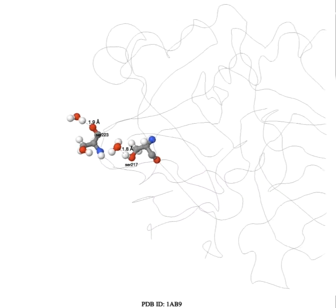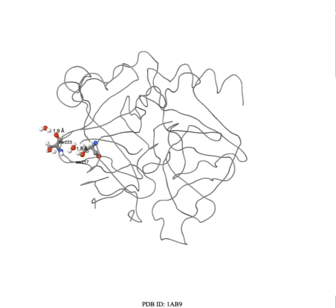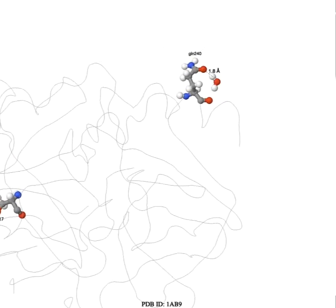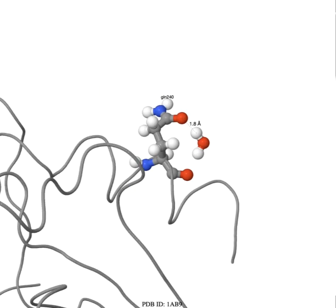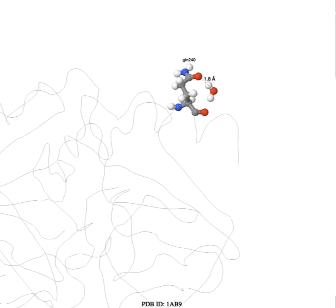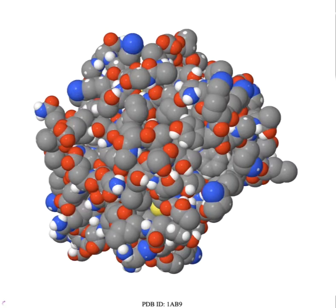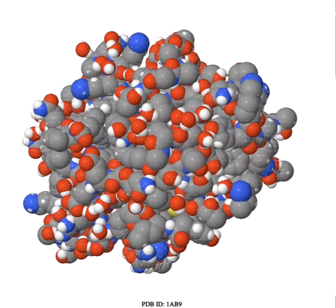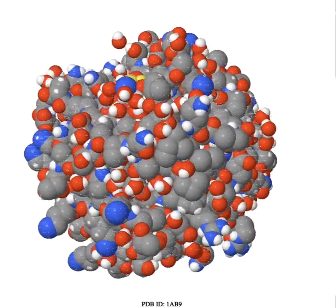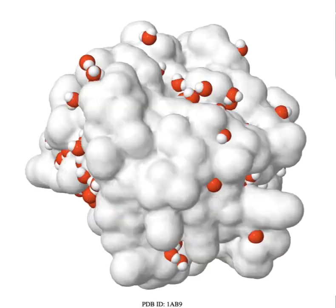Another example is an H-bond between a water hydrogen and the side chain oxygen of glutamine 240. Only a fraction of the water molecules that surround a protein in vivo are visualized in the chymotrypsin crystal structure of this video. These water molecules, however, can be seen interacting with the protein surface.